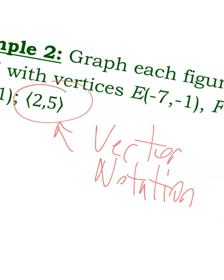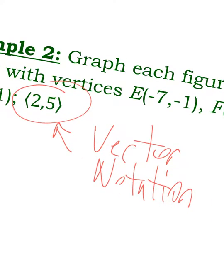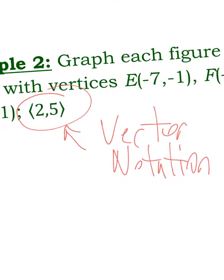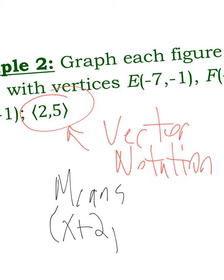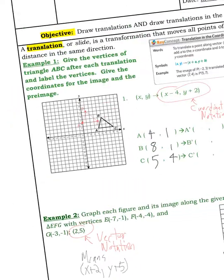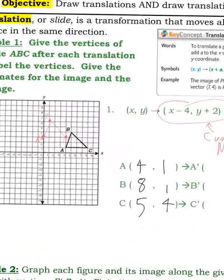There's vector notation. Vector notation, again, written with those brackets. It says 2, 5. It looks like it's supposed to be a point. But what that means is, it means x plus 2. Since 2 is the first number, it goes x comma y. And 5 is positive, so it's y plus 5. So if it was a negative number, it would say like y minus 5 or x minus 2. But that's what it means. It means the same thing. You just see it written a couple different ways.